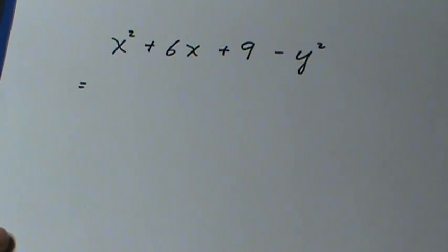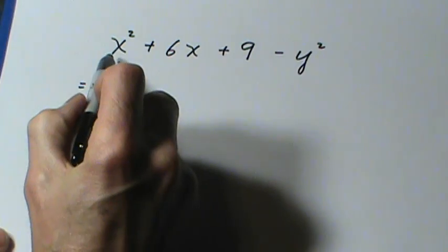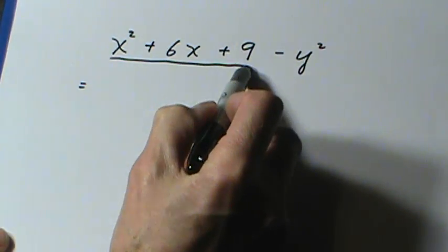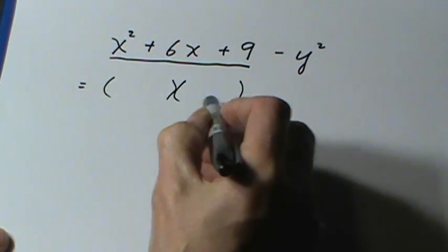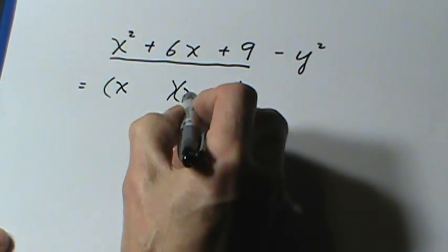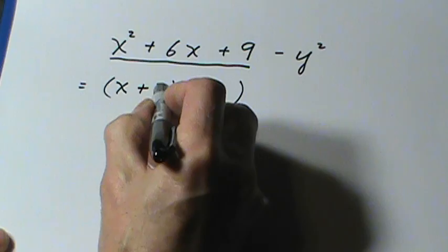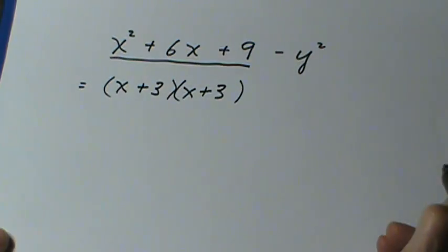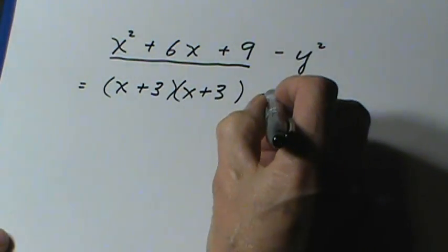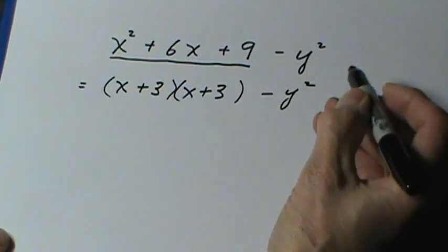Now this is a grouping question, and the way I'm going to group it, I'm going to take these three terms together. They're a perfect square. x times x, and putting in the plus 3 and the plus 3, that gives me the x squared plus 6x plus 9. And then I have the minus y squared on the end.